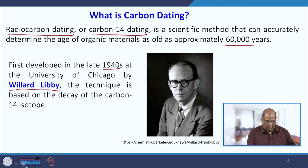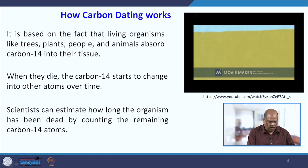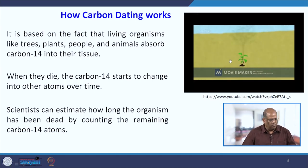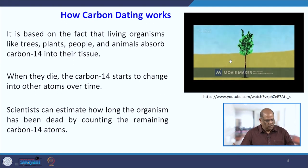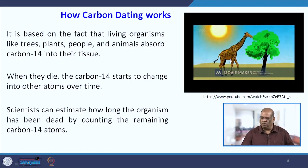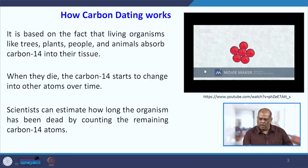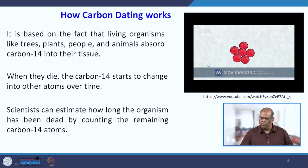Every living thing is made of carbon. Plants absorb CO2 from the outside and use it to form complex molecules. Animals eat the plants and get their carbon from there. But there is more than one form of carbon.